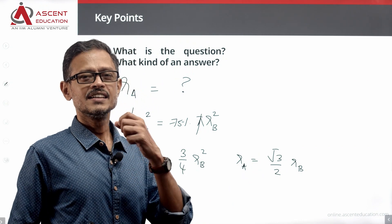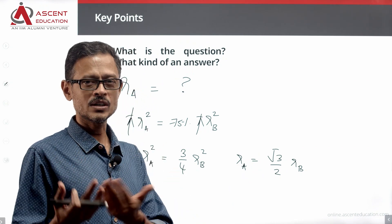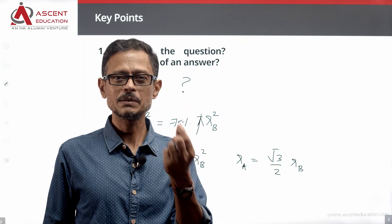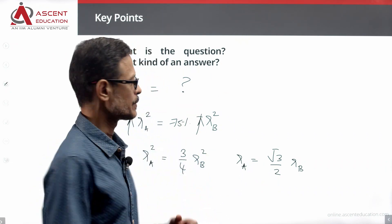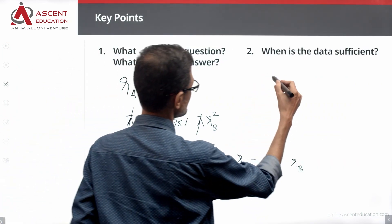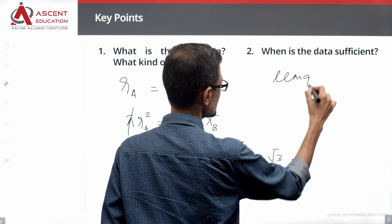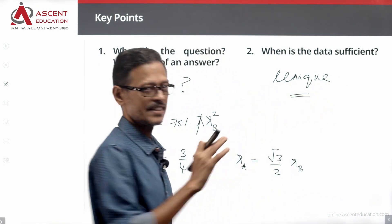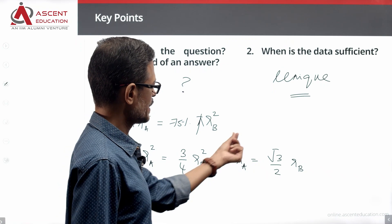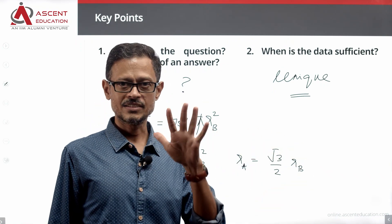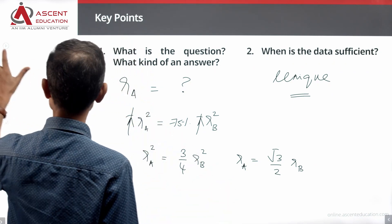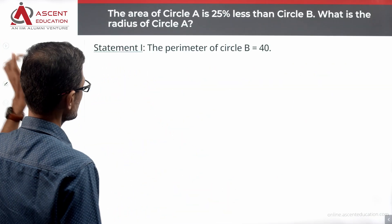So to find the radius of circle A, we need to find Rb. When is the data sufficient? The data is sufficient when we have a unique answer — one single value. We have derived the formula. Now let's start by evaluating statement 1 alone.